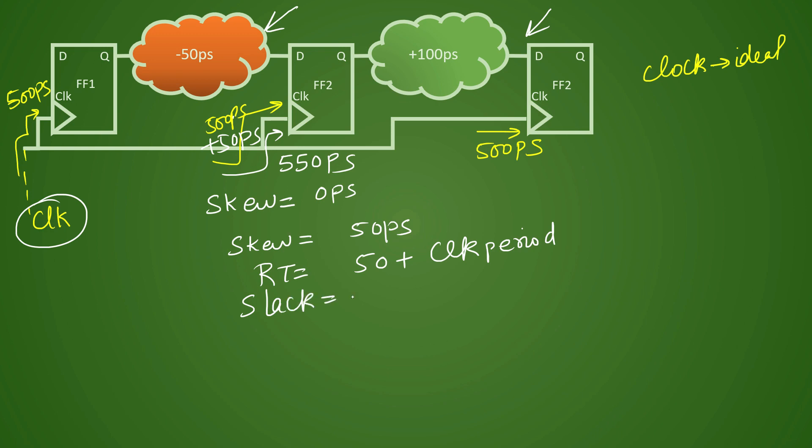So when you calculate slack, earlier your slack was violating in this equation where your required time was some value and your slack calculation. In this calculation now you will have RT plus 50 picoseconds minus AT and this slack earlier was your minus 50 picoseconds.